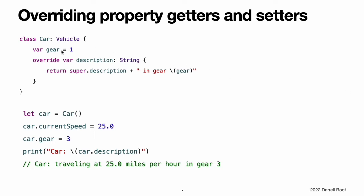Note: if you provide a setter as part of a property override, you must also provide a getter for that override. If you do not want to modify the inherited property's value within the overriding getter, you can simply pass through the inherited value by returning super.someProperty from the getter, where someProperty is the name of the property you are overriding. This example defines a new class called Car, which is a subclass of Vehicle. The Car class introduces a new stored property called gear with a default integer value of 1. The Car class also overrides the description property it inherits from Vehicle to provide a custom description that includes the current gear. The override of the description property starts by calling super.description, which returns the Vehicle class's description property. The Car class's version of description then adds some extra text onto the end of this description to provide information about the current gear. If you create an instance of the Car class and set its gear and currentSpeed properties, you can see that its description property returns the tailored description defined within the Car class.